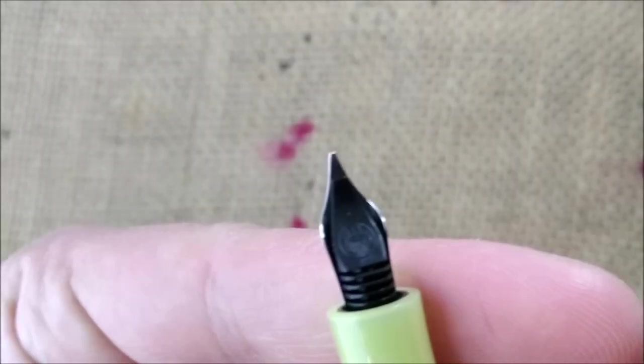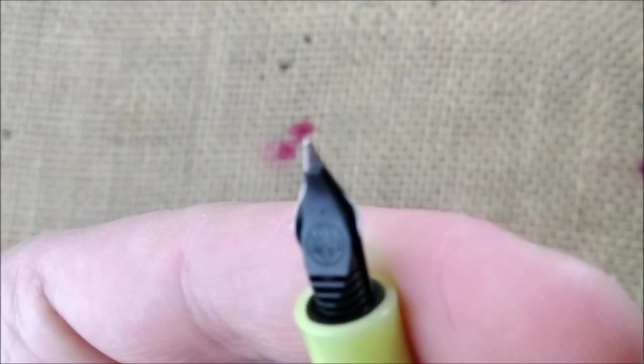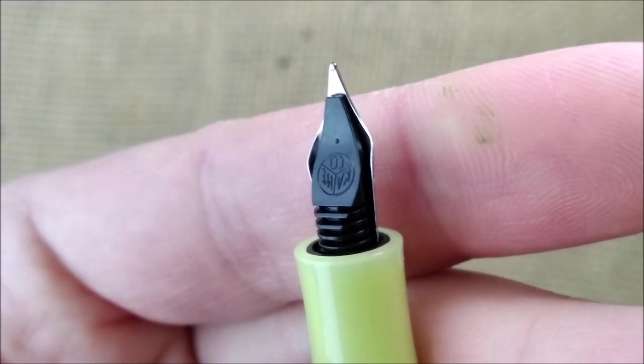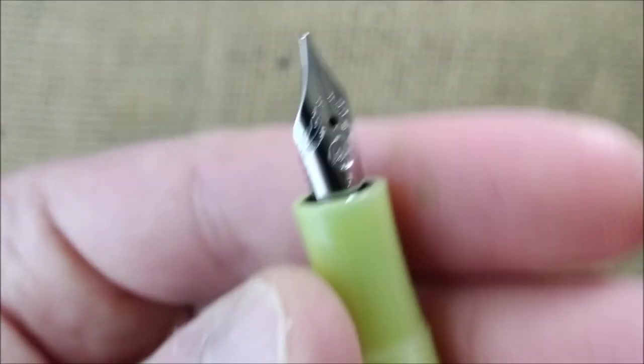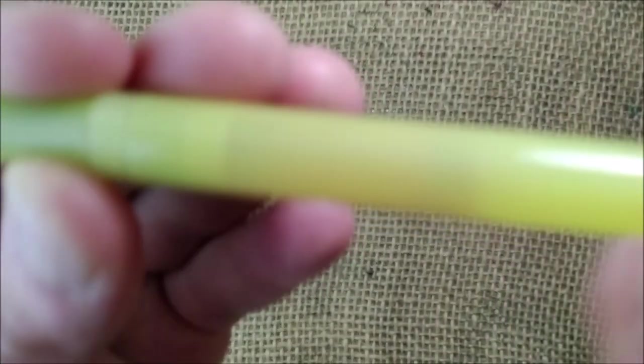Then you have there the Kaweco with the logo Kaweco and then the F beneath. Very shiny nib, small, number five nib and there you have the feed with the Kaweco Sport logo imprinted.